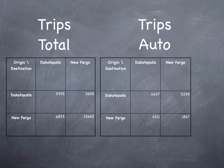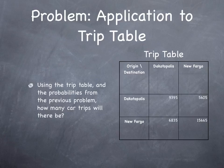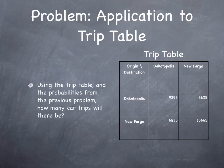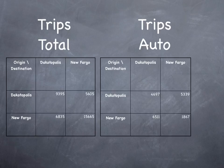If the total trips is 9395 and 50% of them are taking auto in the intrazonal Dakotopolis to Dakotopolis case, there are 4697 trips by auto. Similarly, if there are 5605 trips from Dakotopolis to New Fargo, and 95.3% of them are taking auto, what is 95.3% of 5605? Well, that turns out to be 5339. We solve the same for New Fargo to Dakotopolis and New Fargo to New Fargo, and then we've computed a trip table.